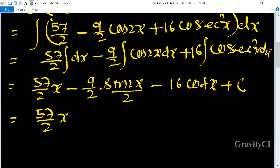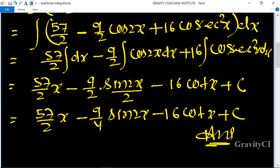minus 16 cot x plus C. So is equal to 57 upon 2 x minus 9 upon 4 sin 2x minus 16 cot x plus C, which is the required answer.